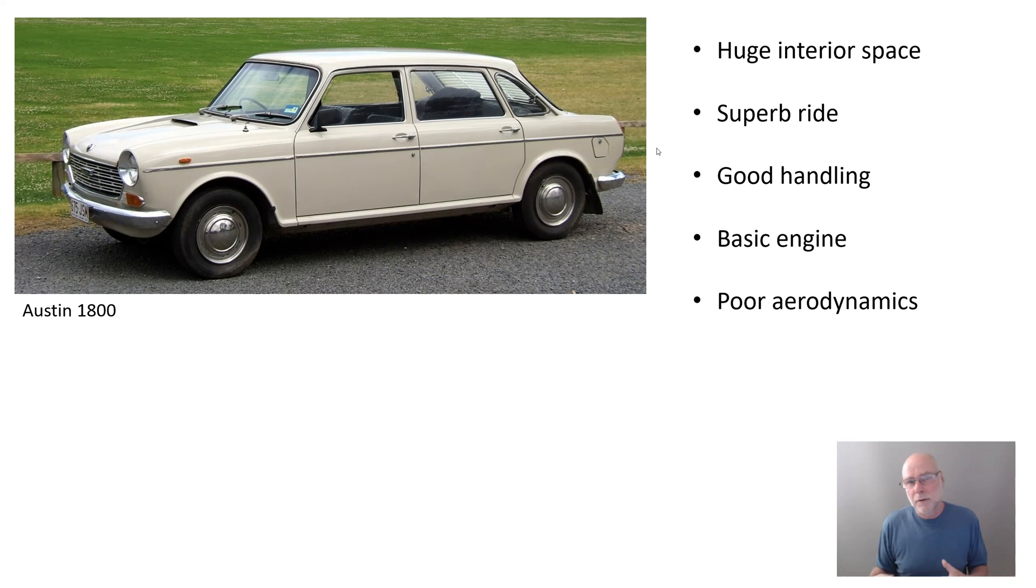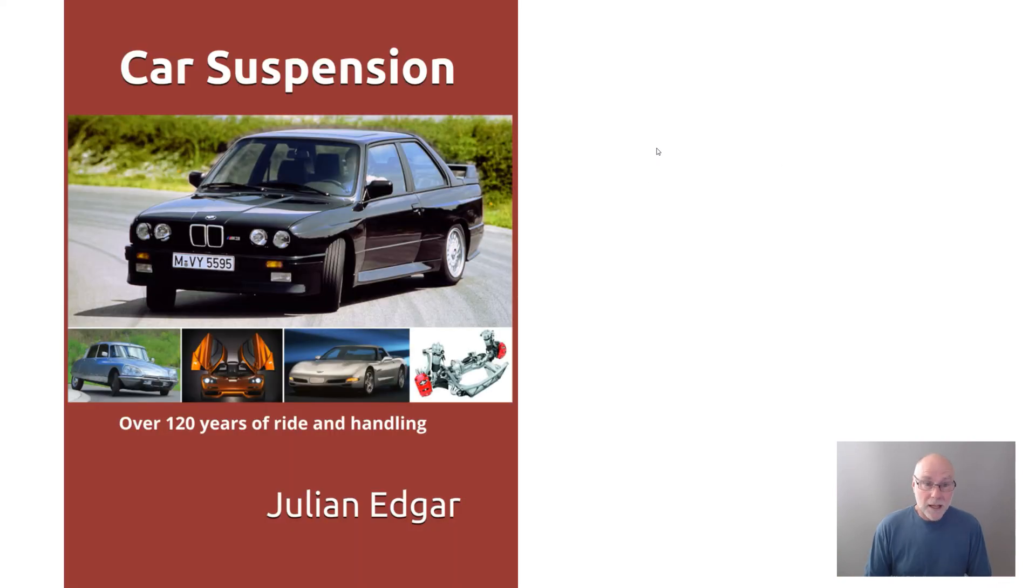These days, why don't we use something similar? With a little bit of electronic control, you could make it even so much better. You could have electronic valving for the interconnection front, rear. There's just so much you could now do. Later, they replaced the rubber with gas spheres, a bit like a Citroen, and therefore didn't have the problems of the rubber in terms of small amounts of deflection. Hydrogas, as it was called, I think could be fitted to cars currently. I don't see any disadvantages. It doesn't have to be trailing arms or double wishbones. It's the displacer which is the innovative part. That's not tied to a particular suspension geometry. It's all in the book, Car Suspension, Over 120 Years of Ride and Handling.